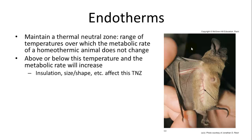Endotherms are generally homeotherms, though not all of them. They maintain what's called a thermal neutral zone — the range of temperatures over which their metabolic activity doesn't change, meaning they don't have to spend energy warming up or cooling off. For humans that's about 72 degrees Fahrenheit. Above or below that, they must do things to maintain a stable body temperature. Insulative layers like fur, hair, or blubber, and the size or shape of the organism all affect the thermal neutral zone.